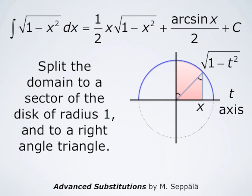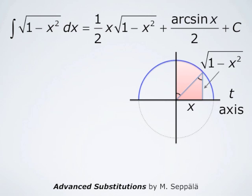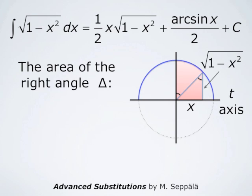We split this domain into a right angle triangle and a sector of the disk, as indicated in this picture. The right angle triangle has a horizontal leg of length x and a vertical leg of length square root of 1 minus x squared by definition. The area of a triangle is base times height divided by 2, so the area of this right angle triangle is one half x times square root of 1 minus x squared. This is the first term in the formula for the integral.